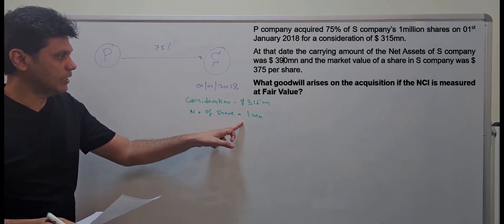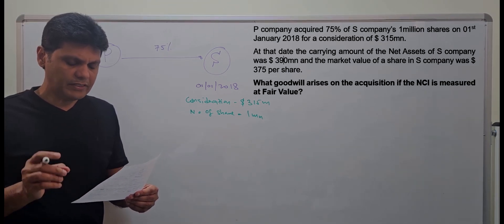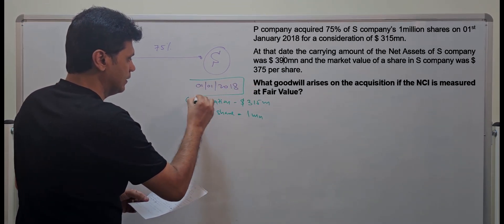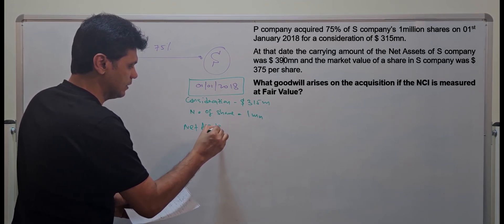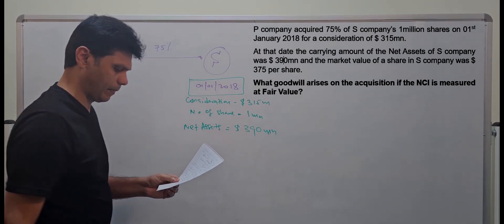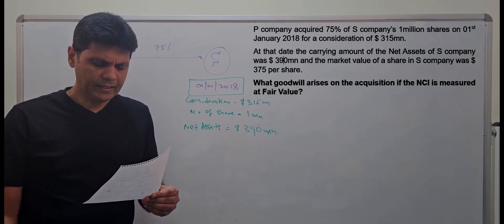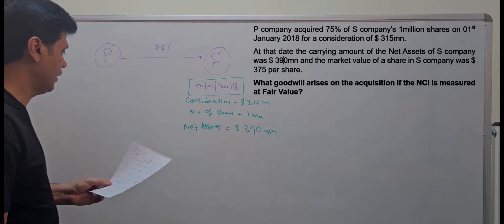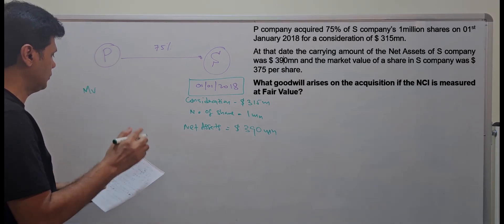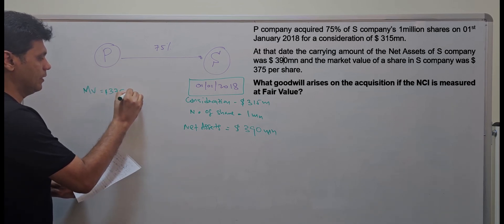The total number of shares of S company was 1 million. At that date, the carrying amount of the net assets of S company was 390 million, and the market value of shares in S company was $375 per share at the time of acquisition.